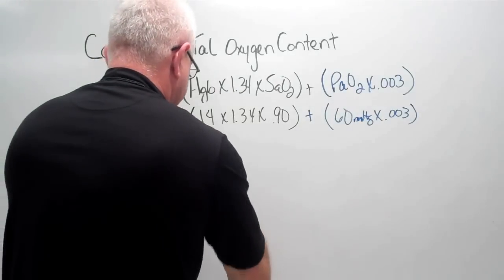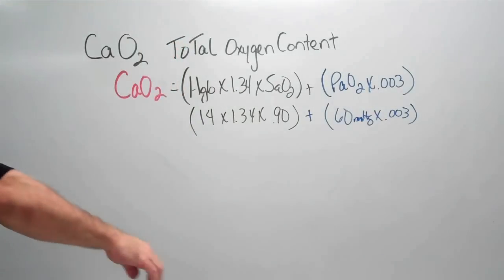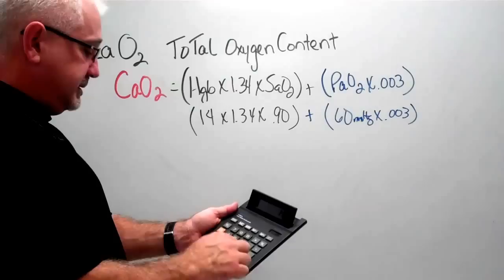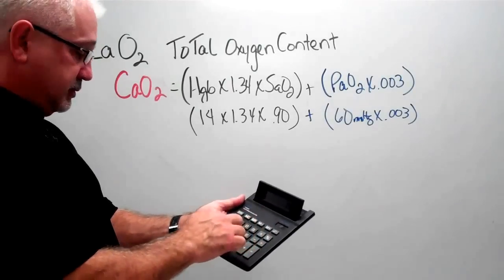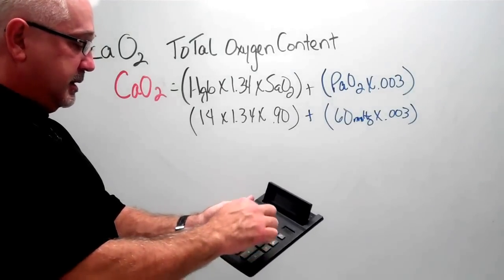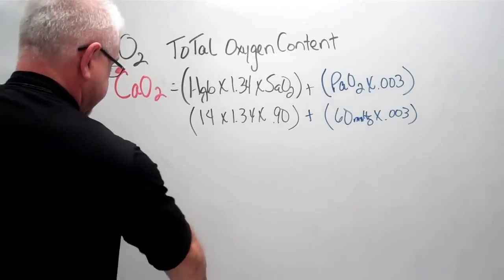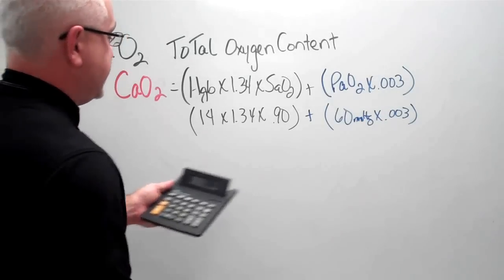At this point, we'd have to take our calculator out and just do the math. 14 times 1.34 times 0.9 equals 16.88.